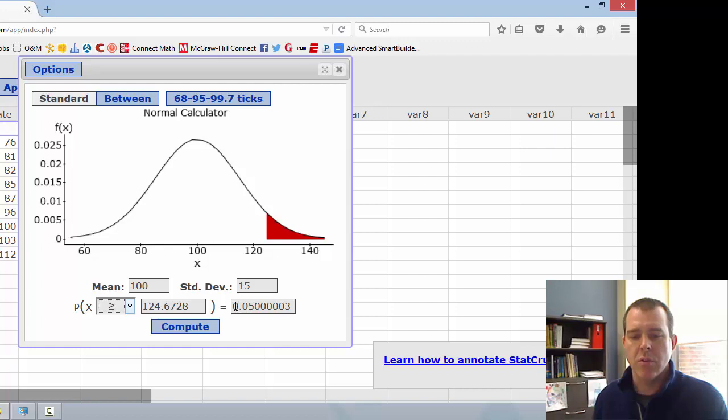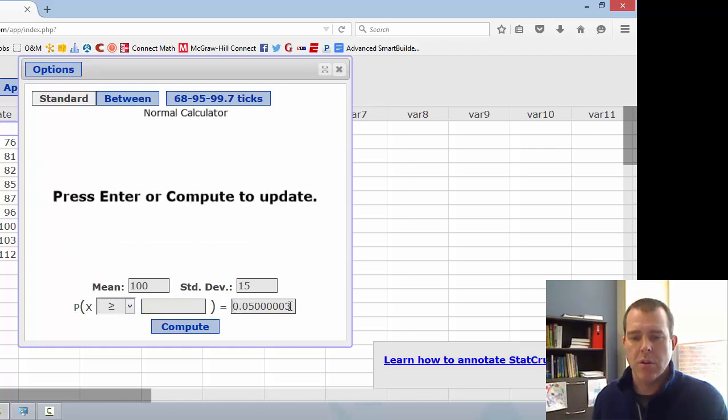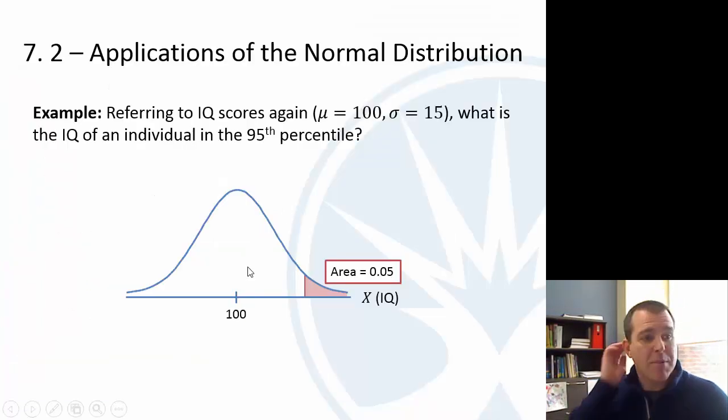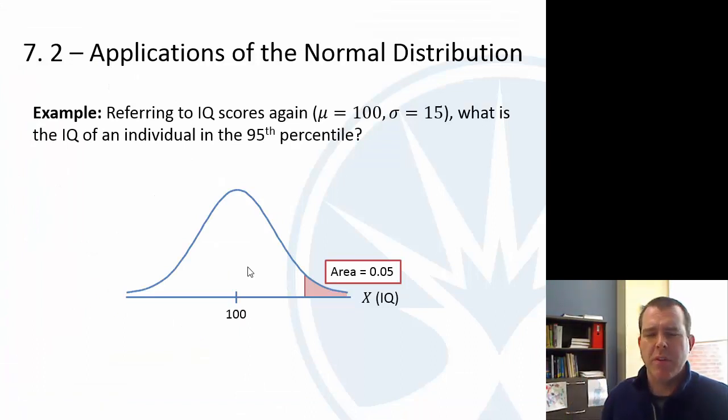Now I could have done greater than or equal to. Done greater than or equal to. And I said the area to the right is 0.05. And again, it's about 125. Because of that symmetry, 0.95, 0.05, they have to add up to 1. And so whether you look for the area to the left being 0.95, or area to the right being 0.05, they'll be the same. So that particular value would be about, what do we say, 125. So an IQ in the 95th percentile would be about 125.